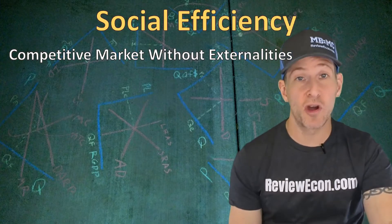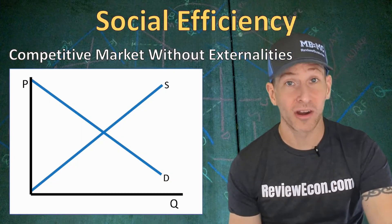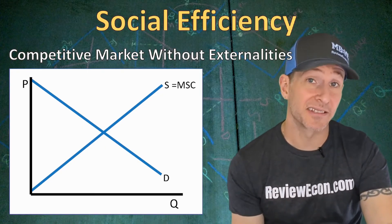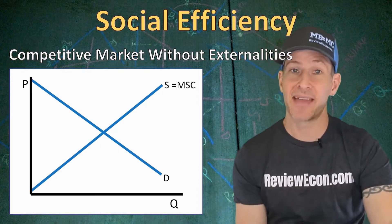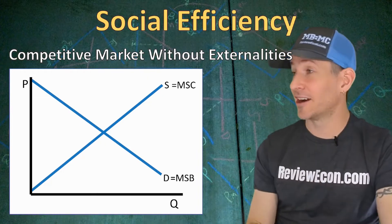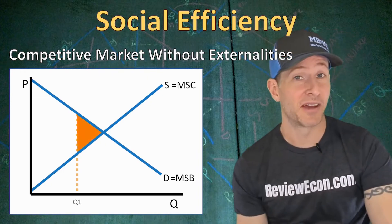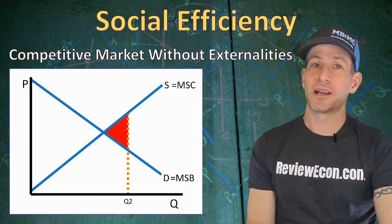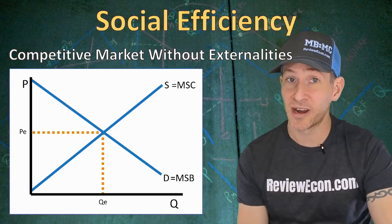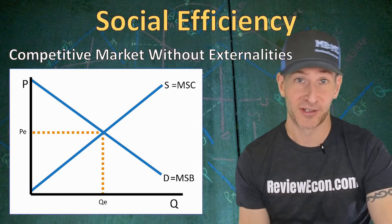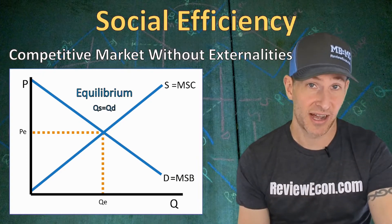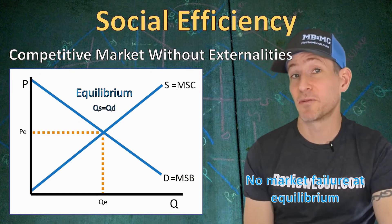When it comes to competitive markets with no externalities, they are socially optimal. That's because the marginal social cost curve is the supply curve when there are no externalities, and the demand curve is the marginal social benefit curve when there are no externalities. If we underproduce we'll have deadweight loss, and we'll also have deadweight loss if we overproduce. But when we have a free market with no government intervention, we reach equilibrium — and that's where we are allocatively efficient or socially optimal, because at the equilibrium quantity the marginal social benefit equals the marginal social cost. There is no market failure when we reach equilibrium.